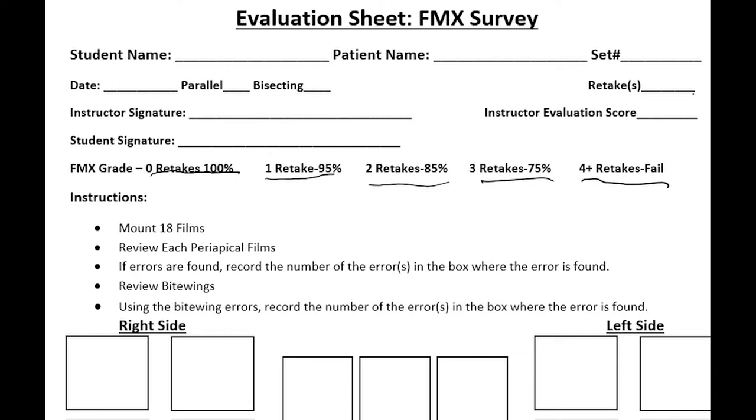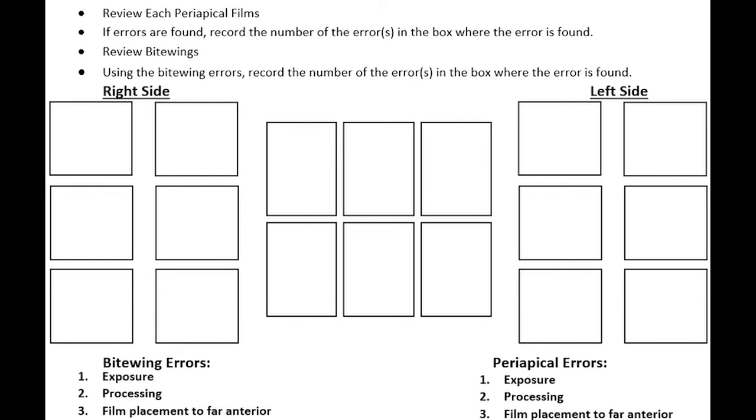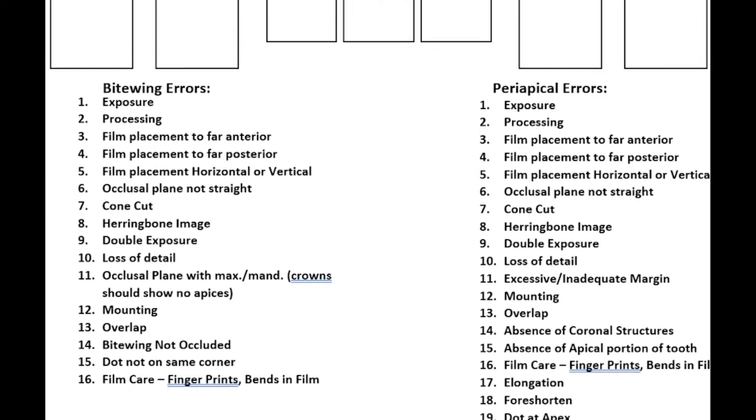As we go down, we can see our FMX laid out: right side on the left, patient's left side on the right, and we have the appropriate 18 films here for the full mouth x-rays.